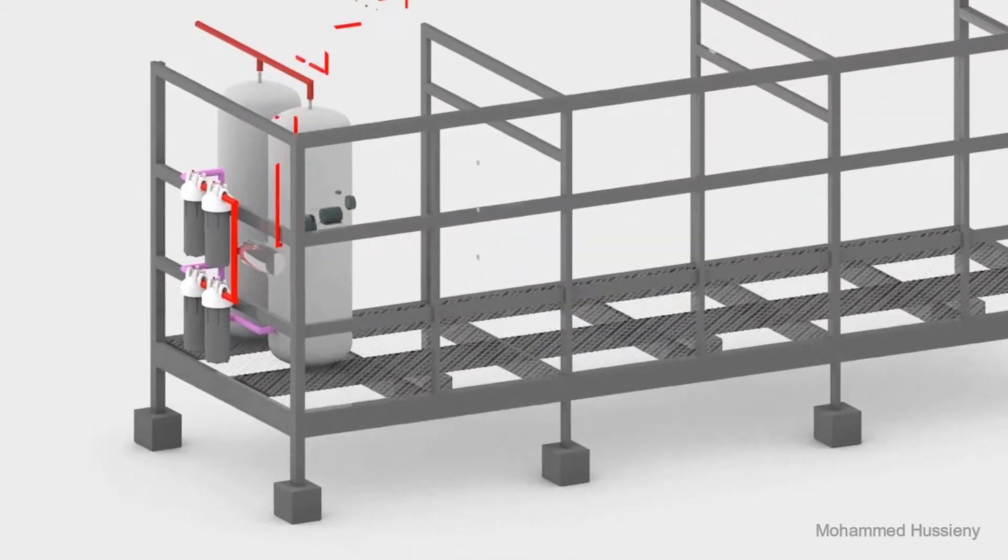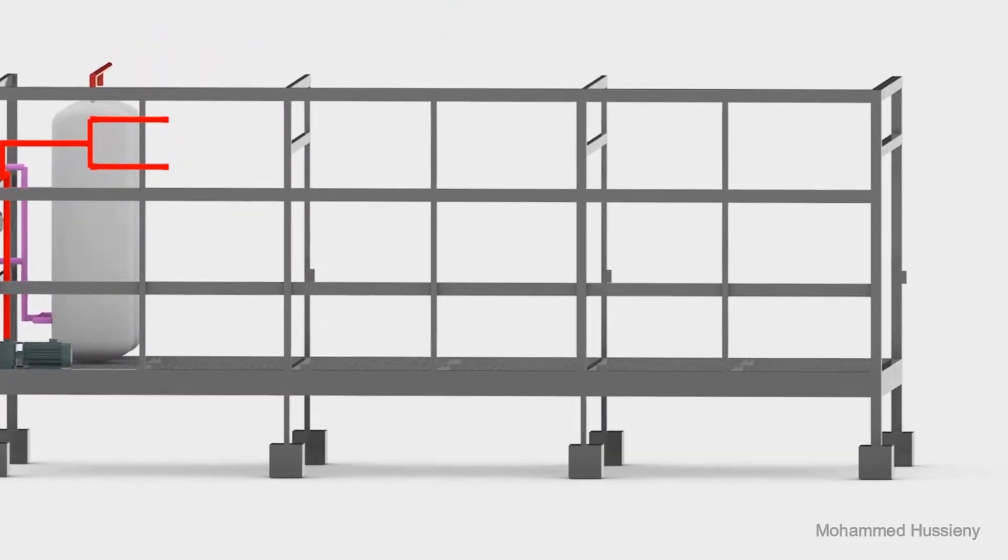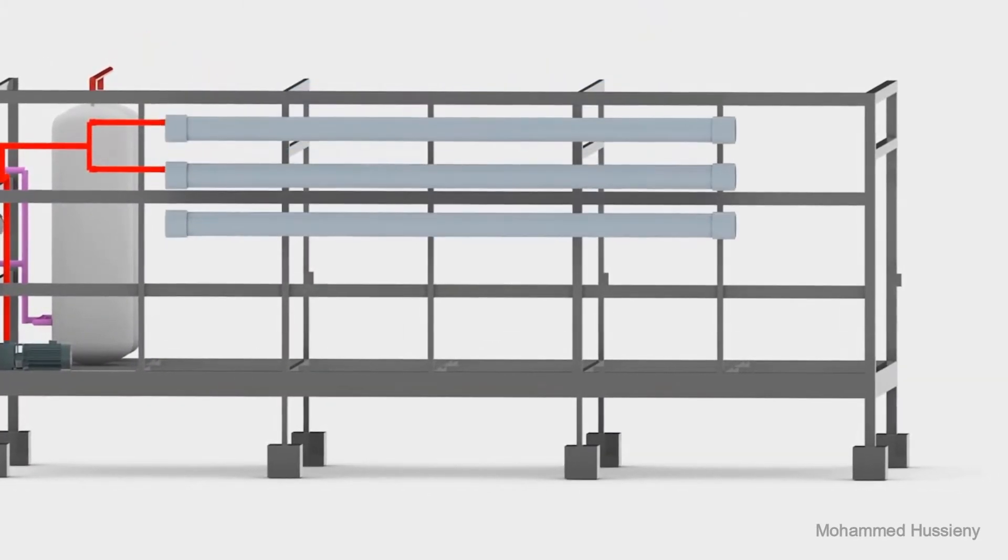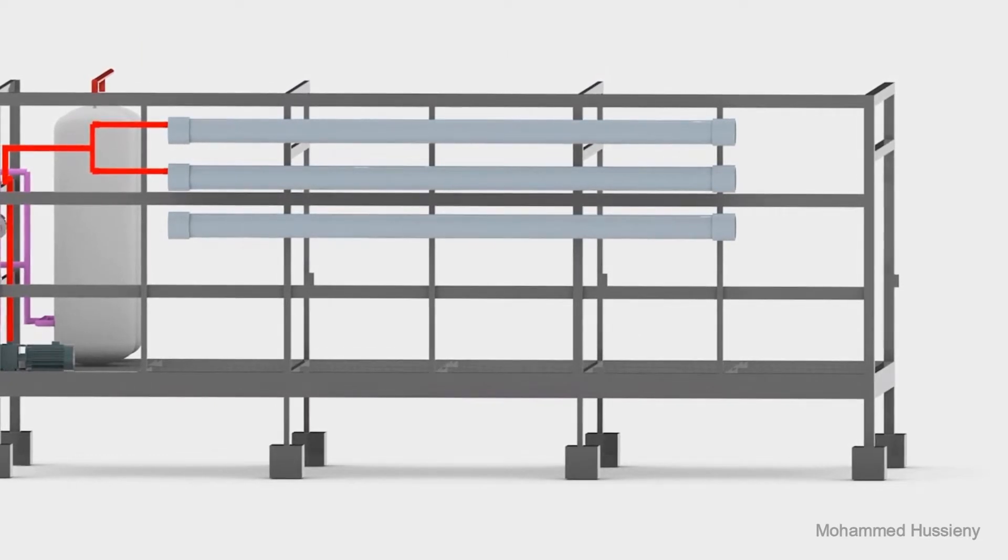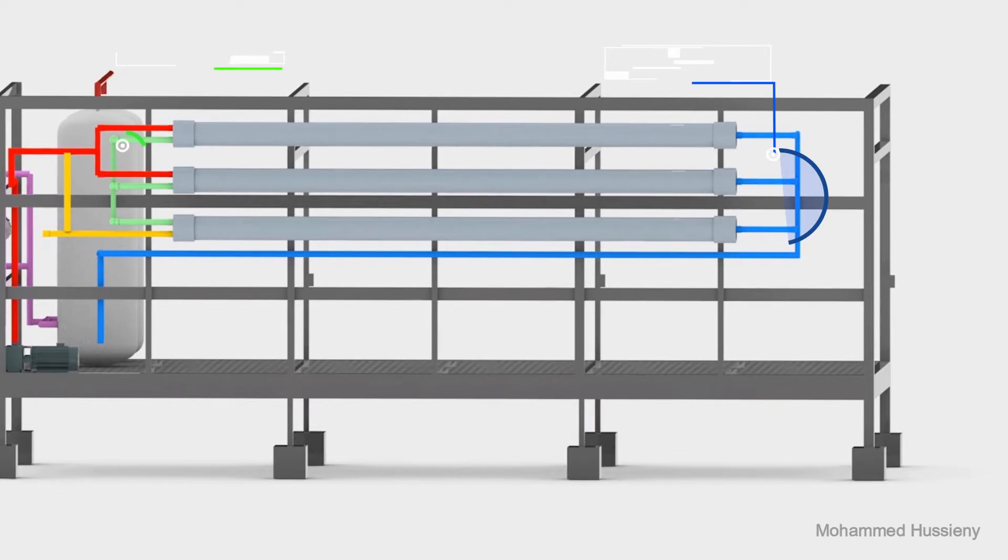Now, the water is ready to get pumped into the RO system to remove the main part of the dissolved salts. The flowing water gets pumped into the first stage of the first pass. Then its concentrate flow enters the second stage of the first pass to increase the overall recovery percentage.